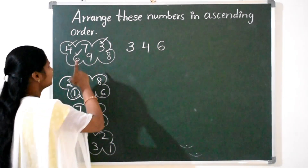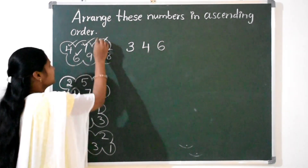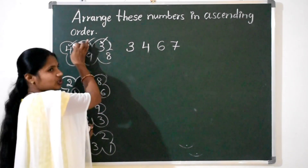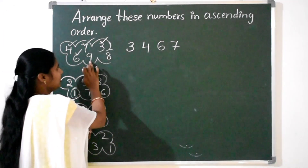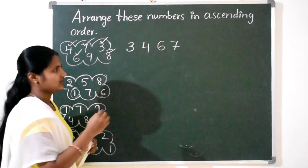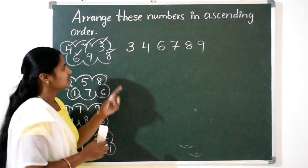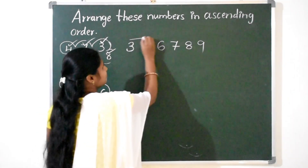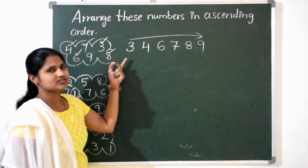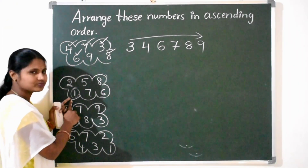Next we have 3 more numbers left: 7, 9, 8. Very good — 7 comes next. Write number 7. Now from 9 and 8, which is the smallest number? 8 is the next number. Write 8. And the last number we have is 9. So we have arranged the numbers from small to big: 3, 4, 6, 7, 8, 9.